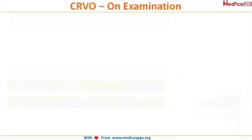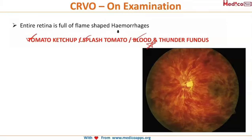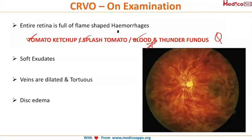On examination, you are going to find a very dramatic and characteristic scene. We call this the splashed tomato appearance, or the tomato ketchup fundus, or famously the blood and thunder fundus. The entire retina is full of flame-shaped hemorrhages. This is a characteristic of CRVO. Along with that, we can also find soft exudates, and the veins are quite dilated and tortuous, and there is some amount of papilledema — that is disc edema. These are the common features you will find when you examine the fundus.